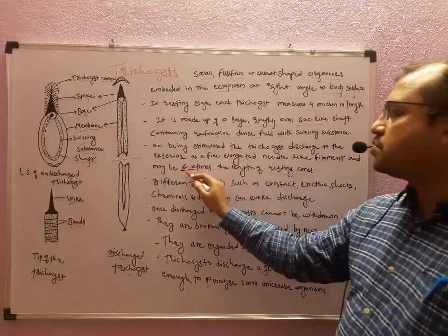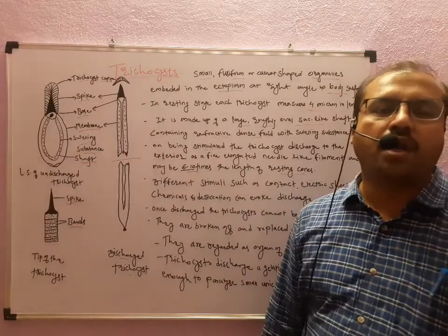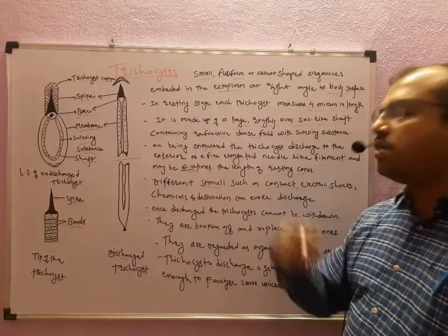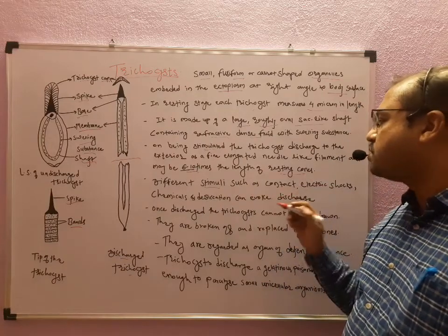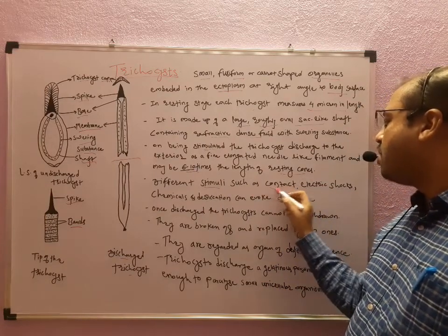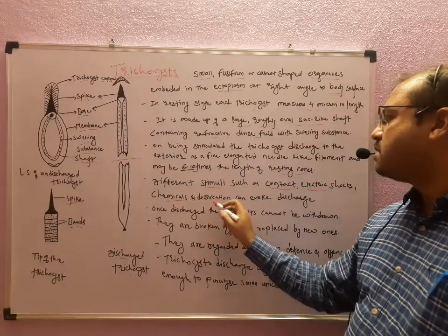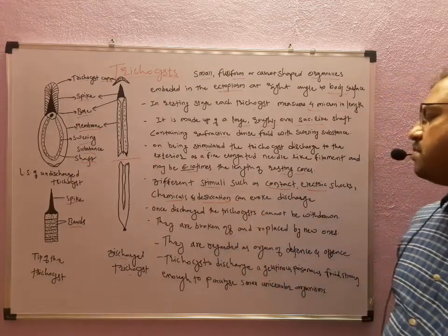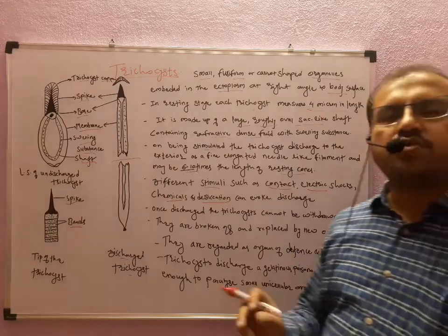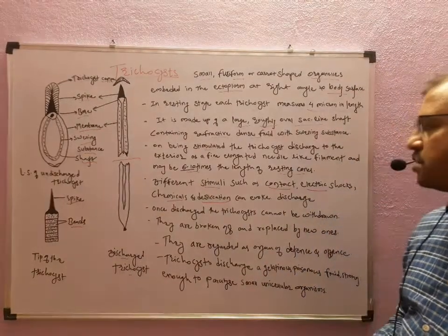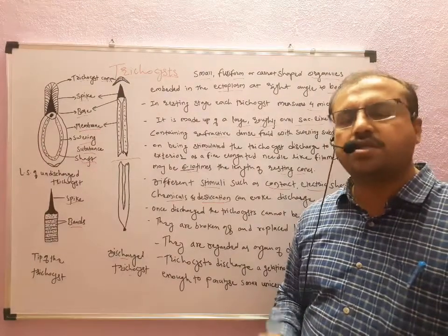At the resting stage they are smaller in size, but whenever they get discharged outside the cell, they get six to ten times more in length. These different stimuli generally evoke the trichocyst: contact, electric shock, chemicals, and desiccation.